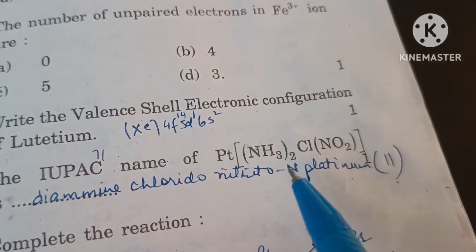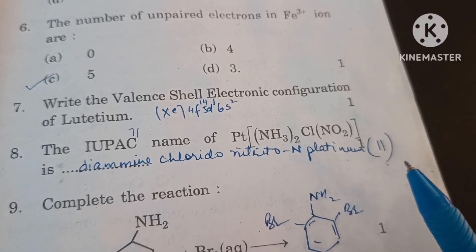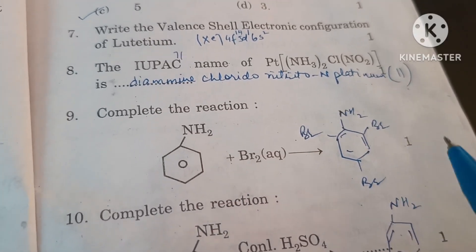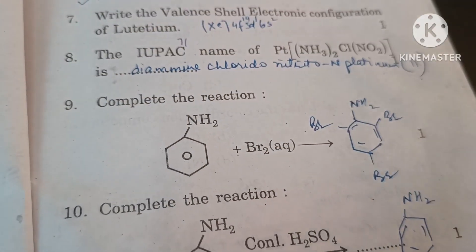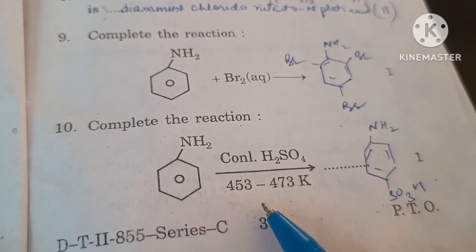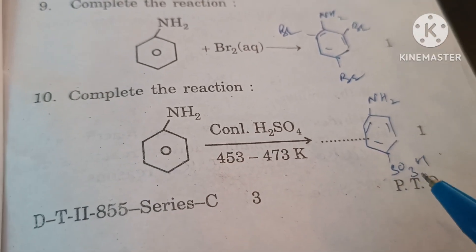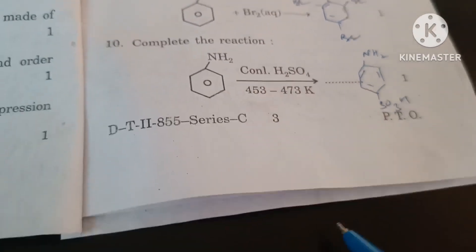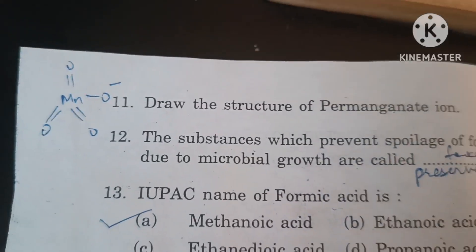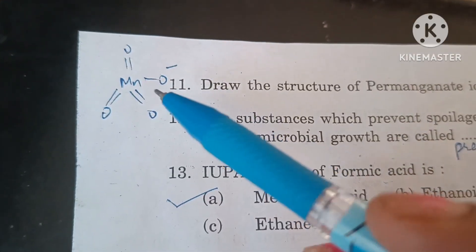The IUPAC name of this compound is diamine chlorido nitrito-O-N platinum(II). Complete the reaction: aniline plus bromine gives 2,4,6-tribromoaniline. Complete the reaction sulfonation of aniline: it will give para-sulfanilic acid or para-aminobenzene sulfonic acid.